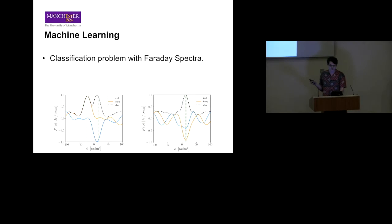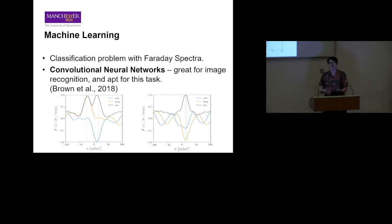Machine learning comes into this because we have a classification problem with these Faraday spectra. It's a non-trivial classification problem. The peaks can have varying amplitudes, varying separations, and with complex thick cases, a fairly unknown nature at this point. Convolutional neural networks—we've heard a lot about them today—have been the most successful for this research so far, as well as for much else including many image recognition tasks, which is why they're largely well known.